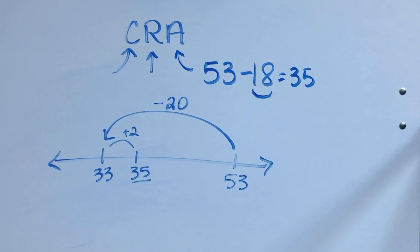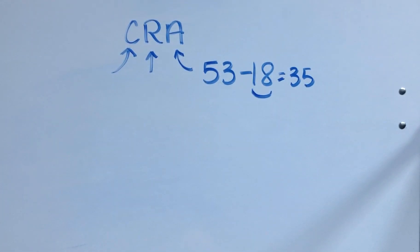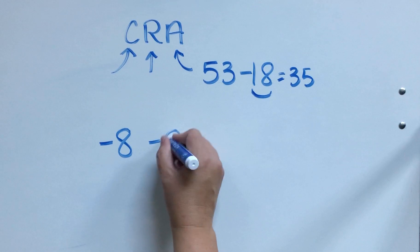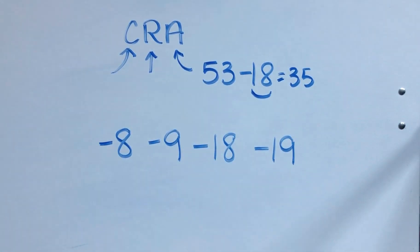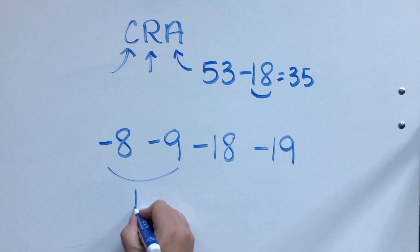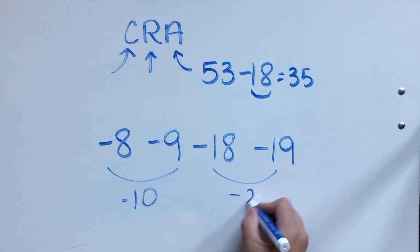Okay, so this is a great representational way to show exactly how we are thinking when we use the compensation strategy. So compensation naturally lends itself to subtracting numbers like 8, 9, 18, and 19, because these are close to friendly numbers, right? We can think about subtracting 10 or we can think about subtracting 20.